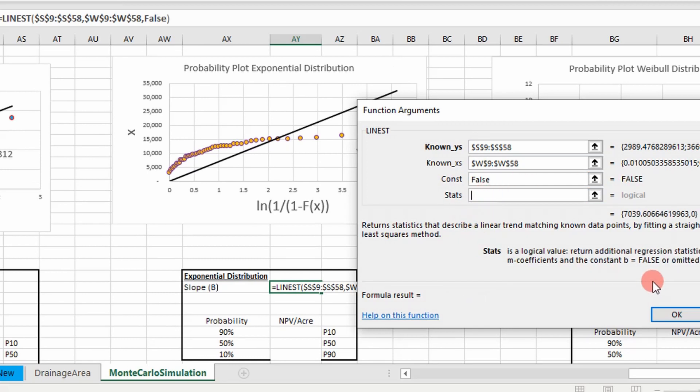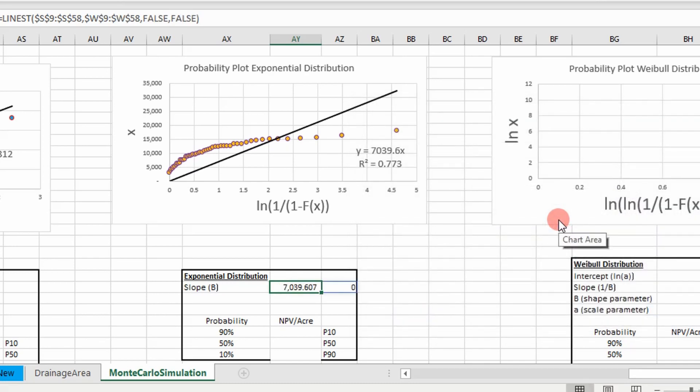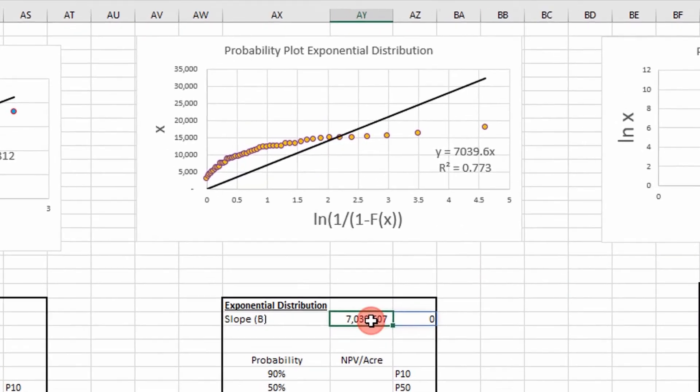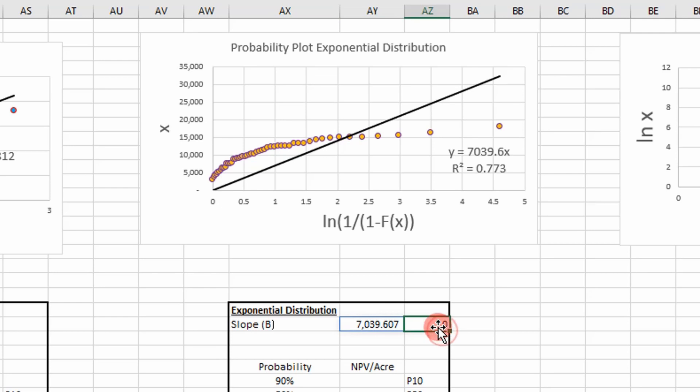It can return other statistics, but I just want the slope and the intercept value, so I'm going to put false. If I do that, it returns our slope right here and our intercept—you can see it's zero. It's forced through zero, so this slope agrees with what we got here, so we're good to go.